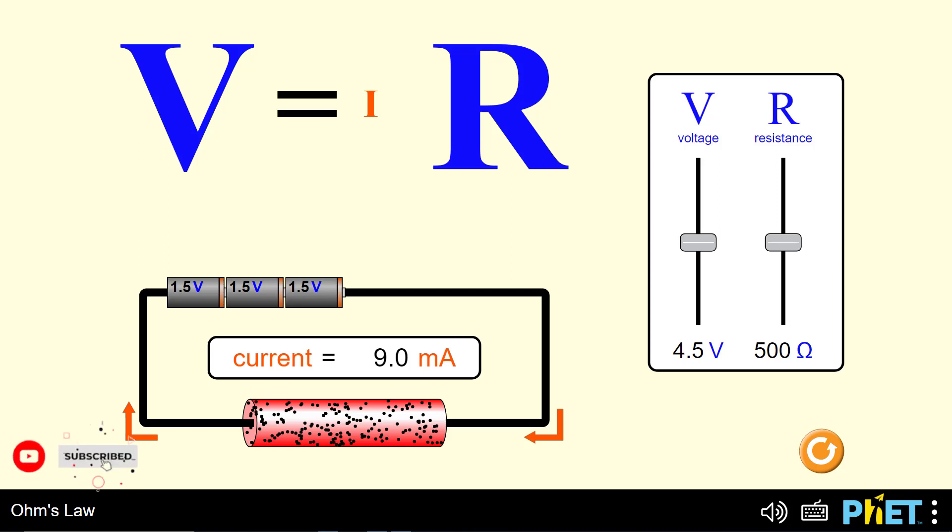In today's video, we will simulate Ohm's law and explore the relationship between current and voltage, and the relationship between resistance and current. Through a practical simulation of a circuit containing an electrical source and a resistance, we will see what happens to the value of the current when changing the voltage and resistance values.